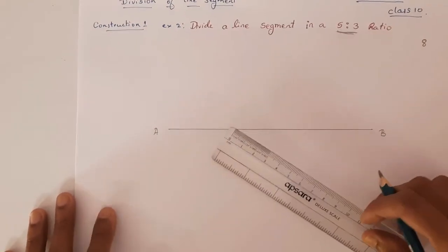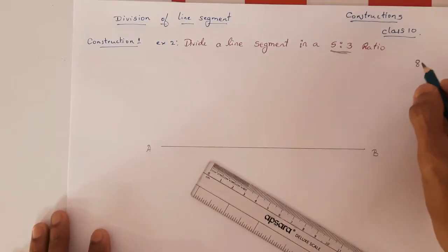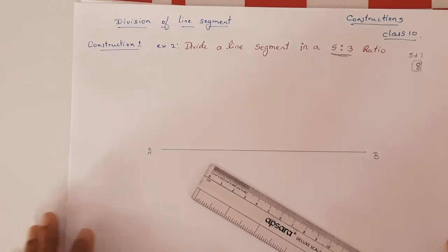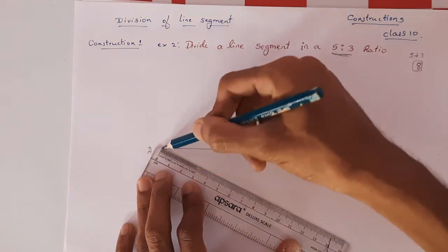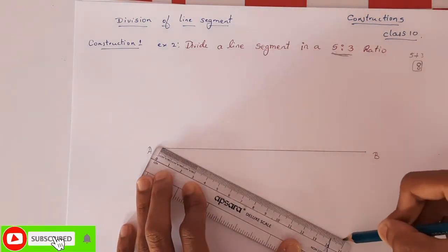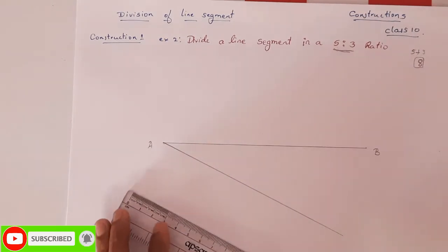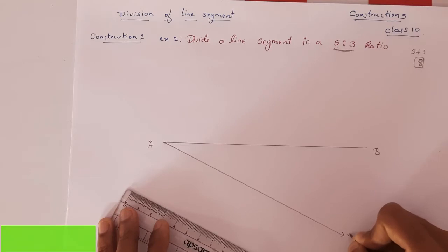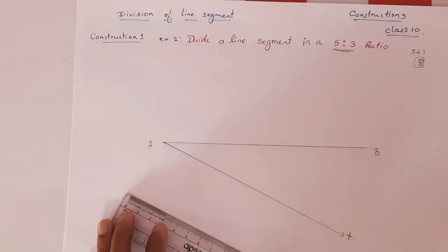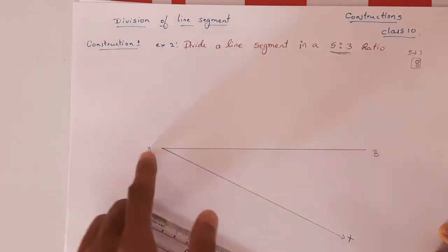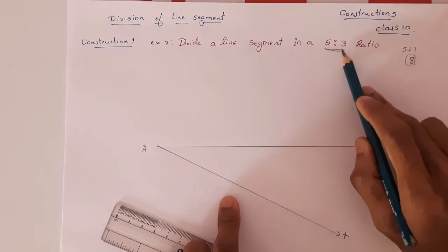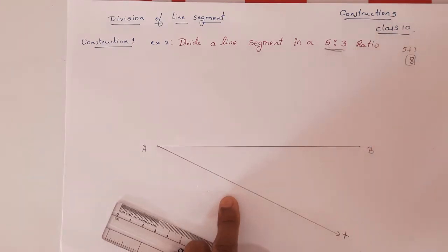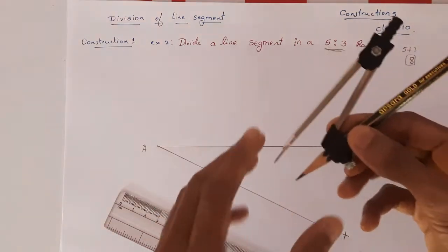We have already added 5 plus 3 equals 8. Now the second step is to draw an acute angle at A. You can draw it at any angle — the exact degree is not required, it is left to you. Take the ray as AX. In the previous question we did five parts because it was a 3:2 ratio, but now it is 5:3, so we need to make eight equal parts.